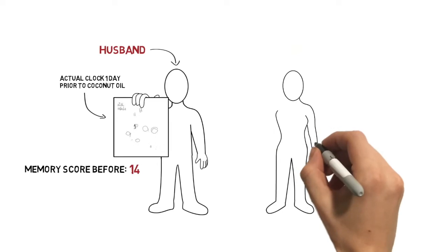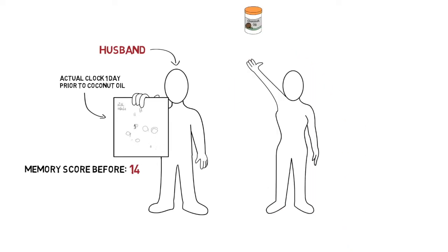After these disappointing results, Mary decided to give MCT oil a shot and knew that coconut oil contained around 60% medium chain triglycerides. The next day, her husband had another screening, so she administered 7 teaspoons of coconut oil to him that morning. Surprisingly, he scored 4 points higher at 18 on the same test as the day before.